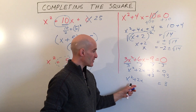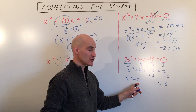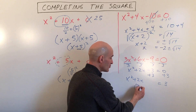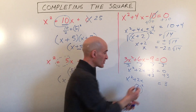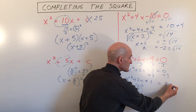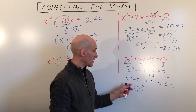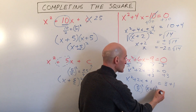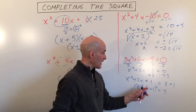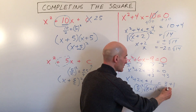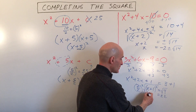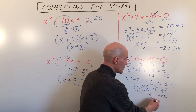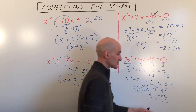Now here's where the completing the square comes in. We're going to take half the middle coefficient — half of 2 is 1, and 1 squared is 1. All I did was take 2 divided by 2 and square it. We're going to add that to both sides of the equation to keep it balanced. Now if we factor this, we get x plus 1 the quantity squared equals 4. If we take the square root of both sides, we get two answers, plus or minus 2. The square and the square root cancel one another out, and all we have to do is subtract 1 to get x equals negative 1 plus or minus 2.